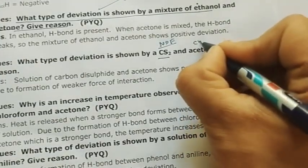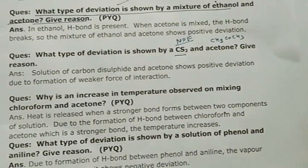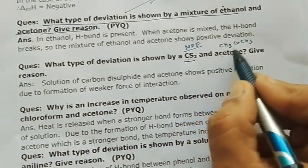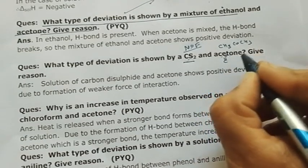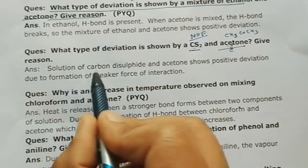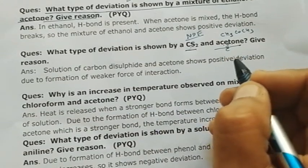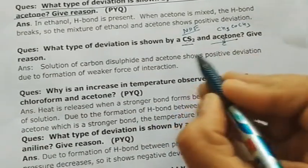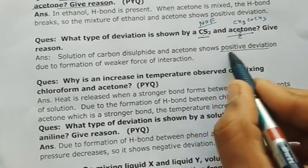Acetone (CH3-CO-CH3) also has no H-bond — although oxygen is present, hydrogen is not directly bonded to oxygen. So neither CS2 nor acetone has H-bonding. When you mix them, the force of interaction between them is weak, and due to this weak force of interaction they show positive deviation. The solution of carbon disulfide and acetone shows positive deviation.